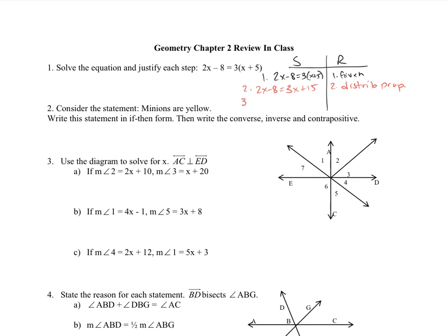Step 3: there are a couple different routes, but I'm going to subtract 2x from each side. So I'll end up with negative 8 equals x plus 15. This was the subtraction property. Then step 4, I subtract 15 from each side, giving us negative 23 equals x — again, subtraction property.